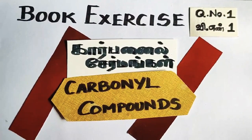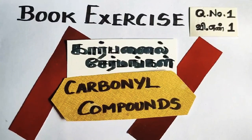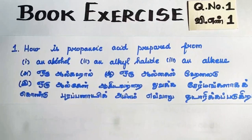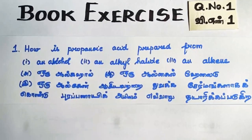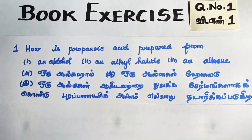The answers are all equation-based, so equations involve different compounds and names. Both Tamil medium and English medium will use the same single video. The first question: how is propanoic acid prepared from an alcohol, an alkyl halide, and an alkene?